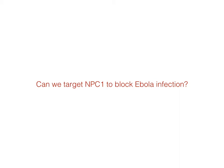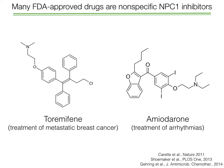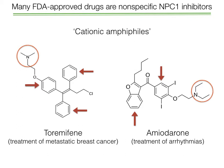Can we target NPC1 to block infection? It turns out there are many FDA-approved drugs that are nonspecific NPC1 inhibitors. Two examples are toremifene and amiodarone, approved for completely different indications, yet they have a protective effect against Ebola. This is because these molecules are cationic amphiphiles — they are both hydrophobic, shown with red arrows, and have positively charged parts circled in the image. It's this combination of being hydrophobic and positively charged that allows these compounds to go into endosomes and block NPC1.